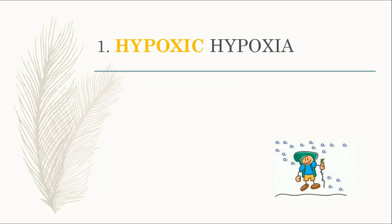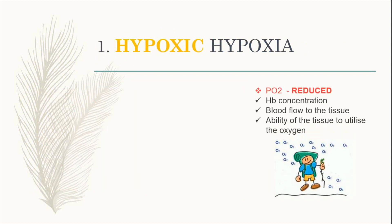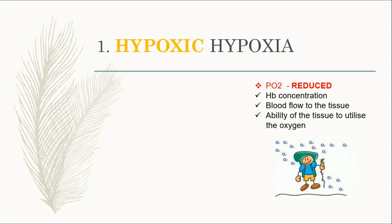The first type of hypoxia is hypoxic hypoxia. This type happens when there is a reduction of the partial pressure of oxygen only, but the other things are normal. For example, this boy has a problem where the partial pressure of oxygen is reduced, but the hemoglobin concentration is normal, the blood flow to the tissue is normal, and the tissue is able to utilize the oxygen.